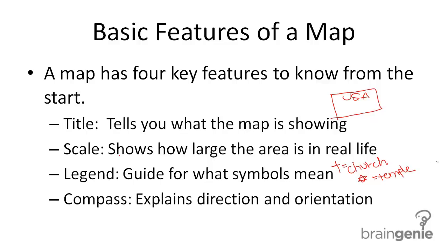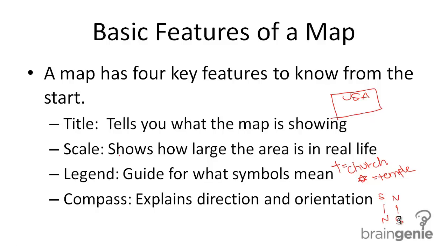And finally, a compass. Maps could be oriented differently — they could have south at the top and north at the bottom, or north up and south down. A compass is what tells you which direction each way goes.